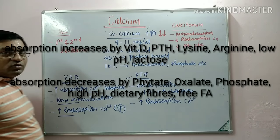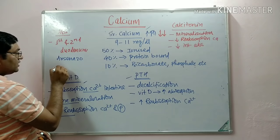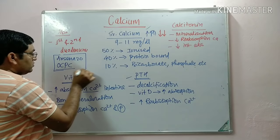Serum calcium is estimated by two methods: first is the RC Niazo method, and second is the OCPC method — O-Cresolphthalein Complexone method. These two methods are more routinely used to estimate the serum calcium level.